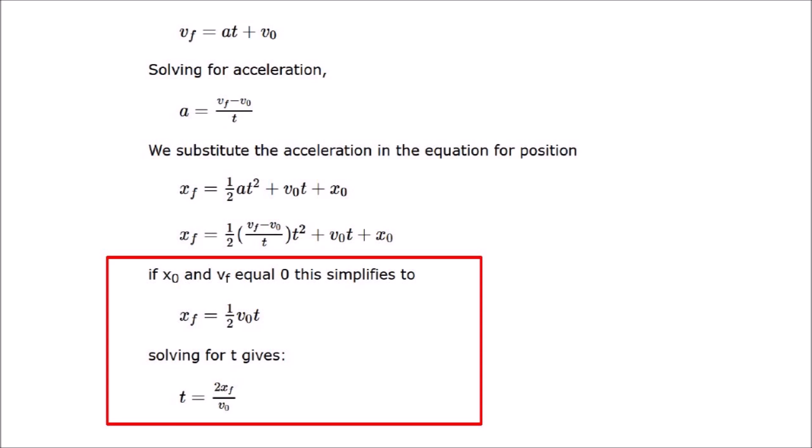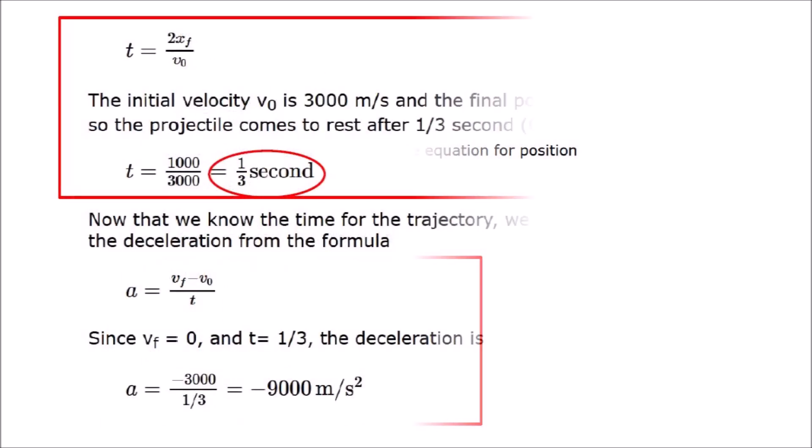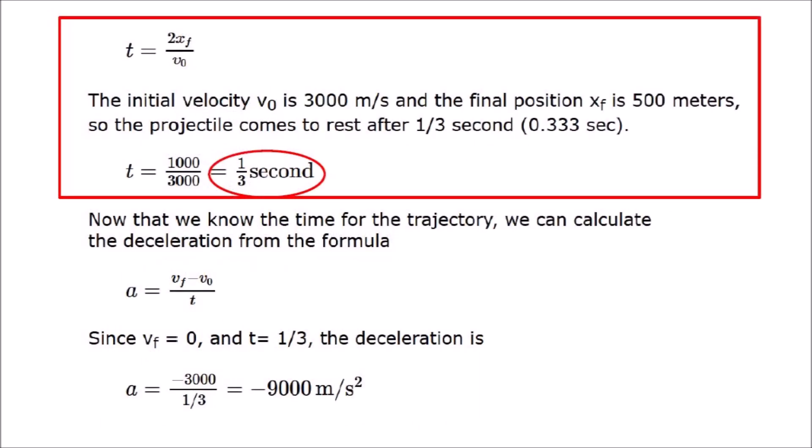The final position, XF, is one half of the initial velocity multiplied by the time of the transit. The time required for the projectile to come to a stop is two times the final position divided by the initial velocity. The initial velocity, V zero, is 3000 meters per second, and the final position, XF, is 500 meters, so the projectile comes to rest after one third of a second. That is really fast.